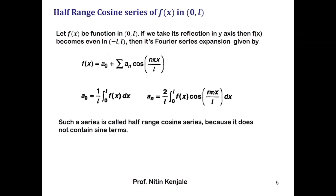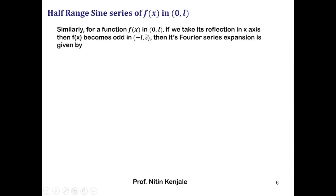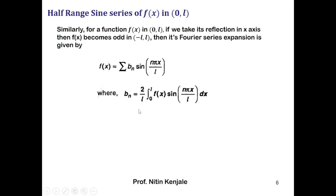On similar lines, we see what is the half range sine series of f(x) in the interval 0 to l. Let f(x) be any function in the interval 0 to l — no matter its nature, whether even or odd. If we take its reflection in the x-axis, then f(x) will always become an odd function in the interval minus l to l. Its Fourier series is then f(x) equals summation b_n sin(nπx/l), where a naught and a_n take value 0, and b_n equals 2/l times the integral of f(x) sin(nπx/l) dx over 0 to l. As there is no cosine term, this series is called the half range sine series.